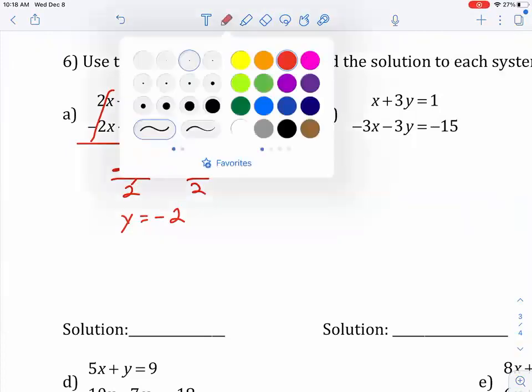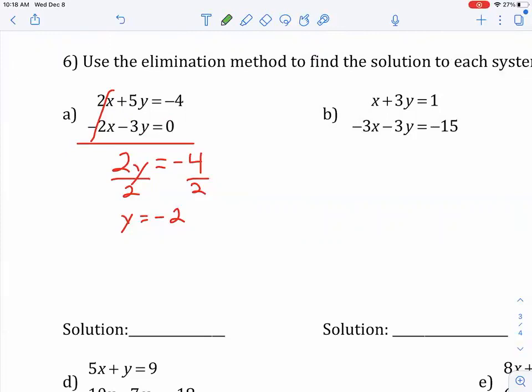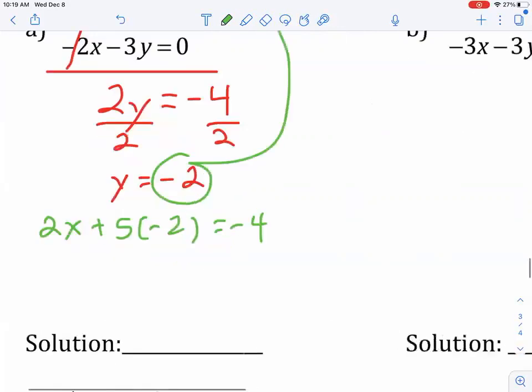So, Y comes out to be negative 2. Now, that's half of my answer, so I need to plug that back in to one of the equations to solve for X. So, I'll take the negative 2, plug it into the top. So, the top was 2X plus 5, and instead of Y, now I'm going to write negative 2, is equal to negative 4.